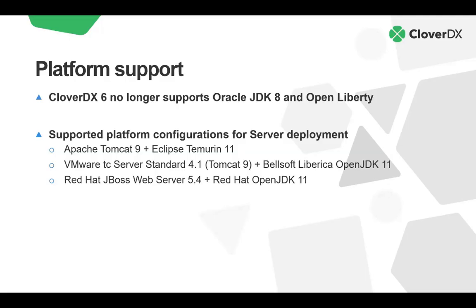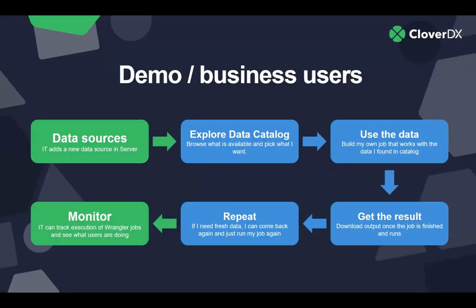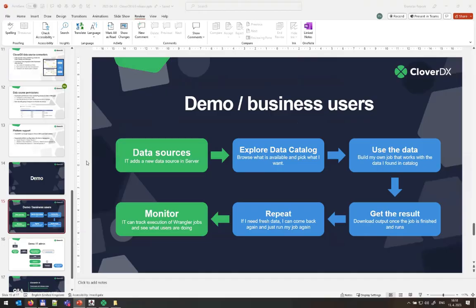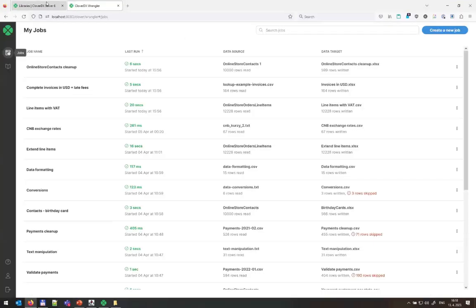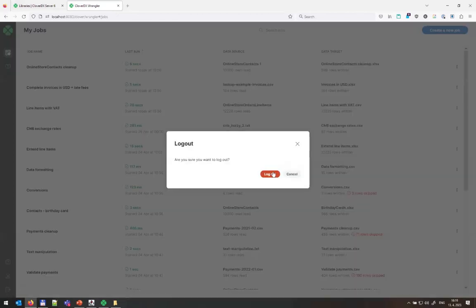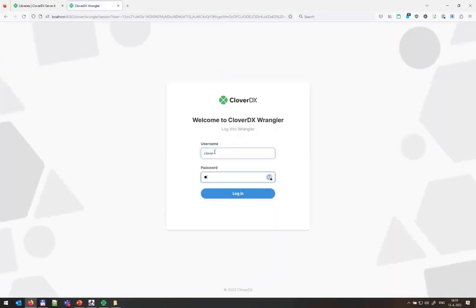So that was the theory — let's now have a look at the demo. I'll show the demo in two parts, looking at the whole process end-to-end: publishing the data source, which IT does (the green boxes), and what business users do with the data (the blue boxes). I'll show the business side first — what Data Catalog and Wrangler look like — and after that, we'll look at what IT does to publish data in the catalog, control permissions, and so on. Let me switch to my Clover and start with Wrangler. There's a separate login screen for Wrangler, and users given access will only ever see this simple interface without needing to touch the server console.